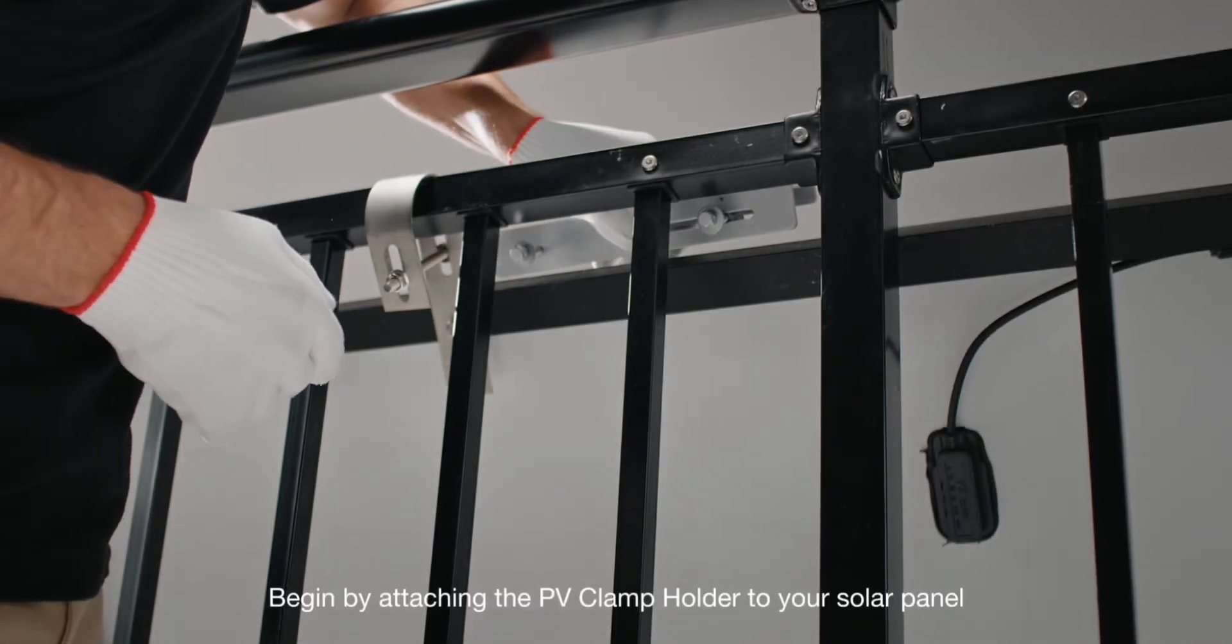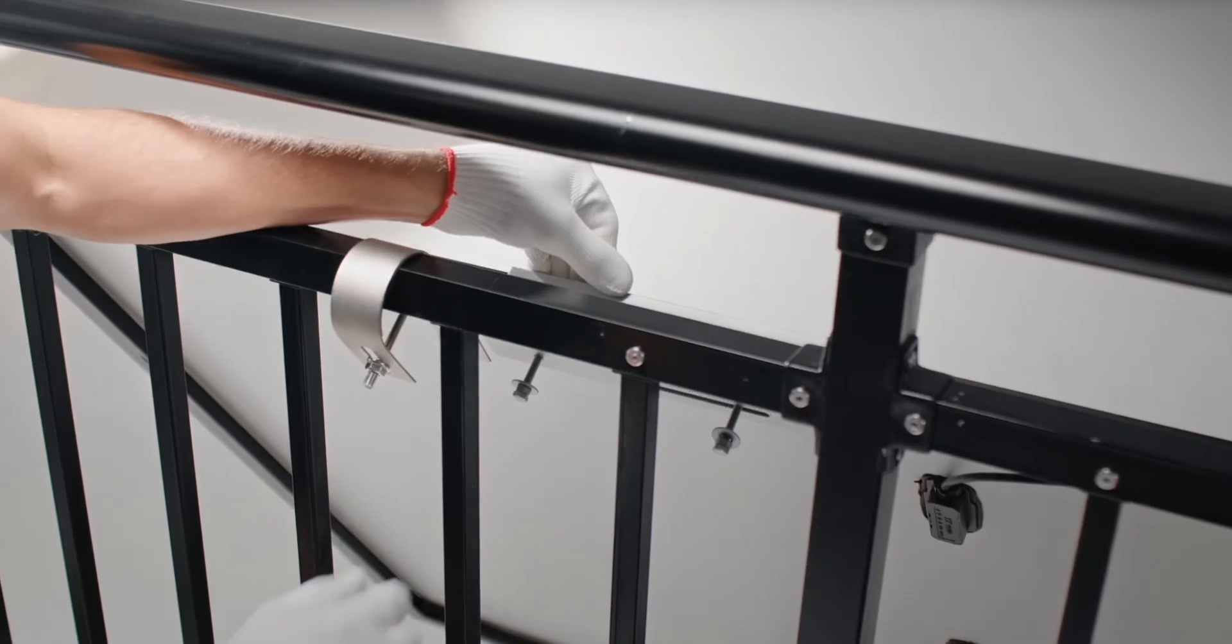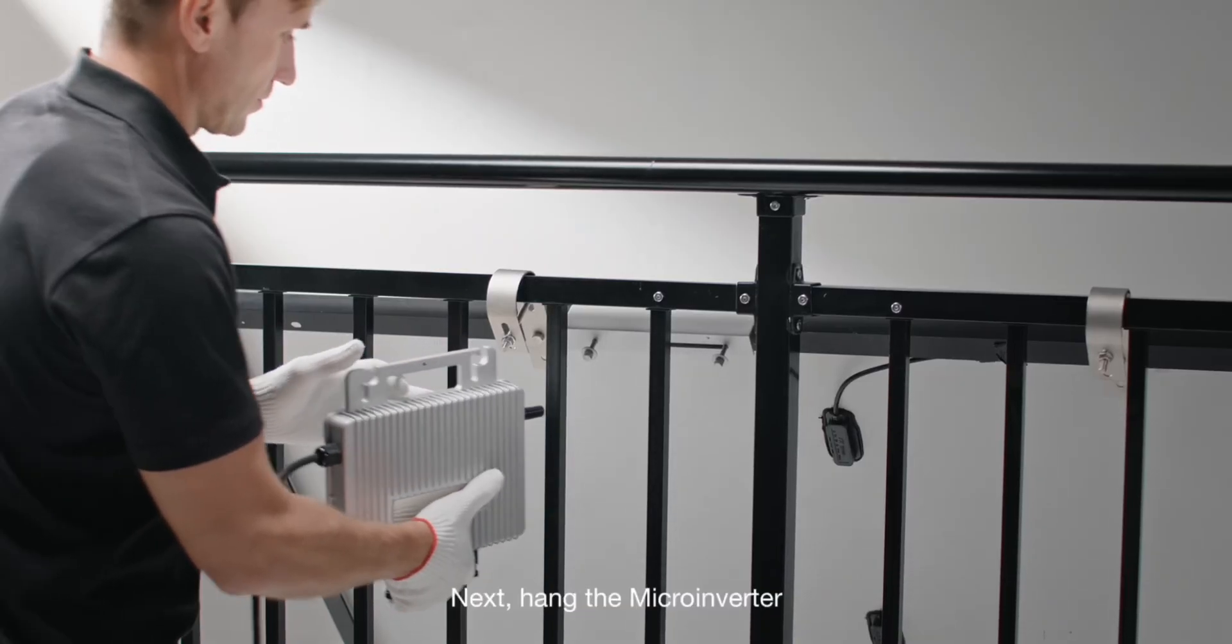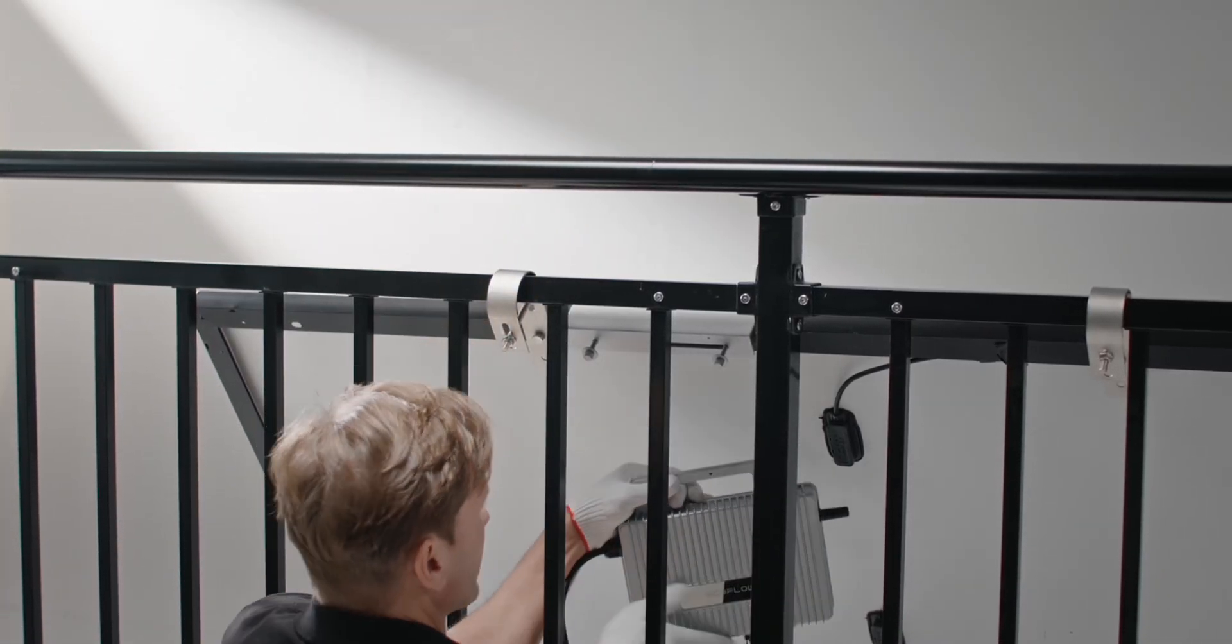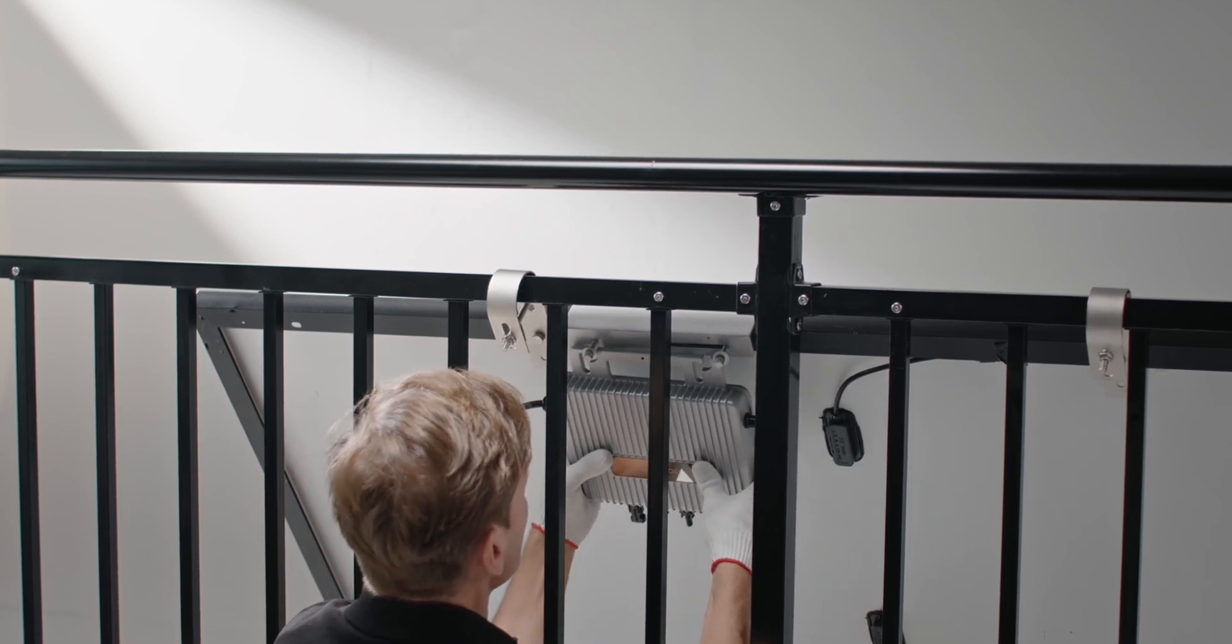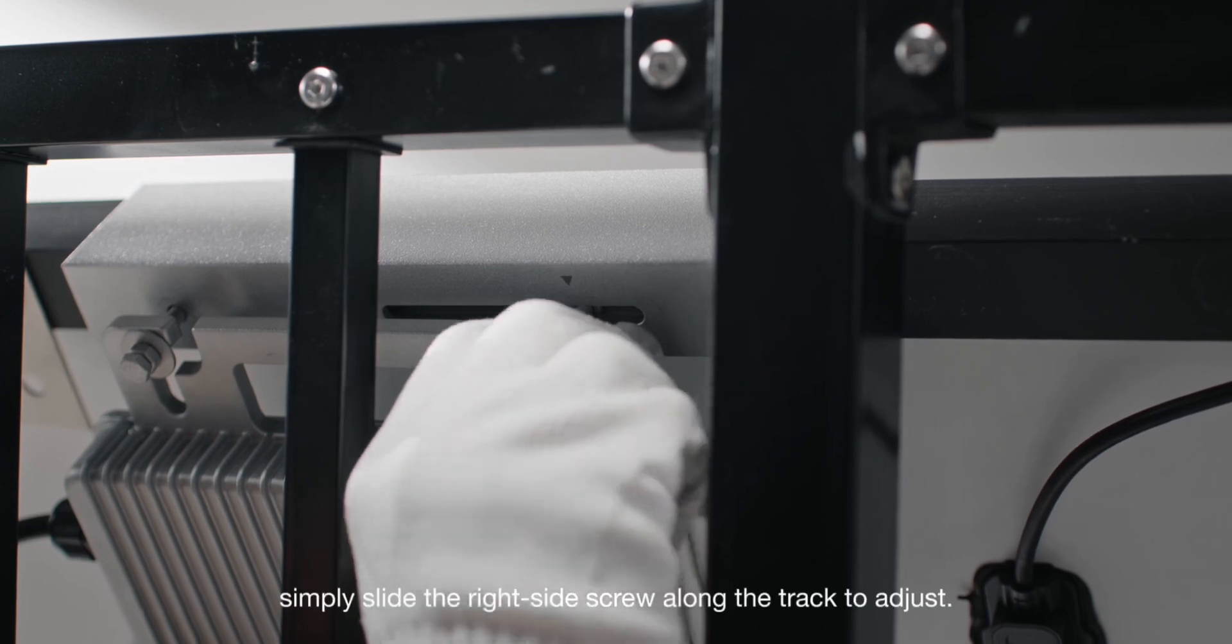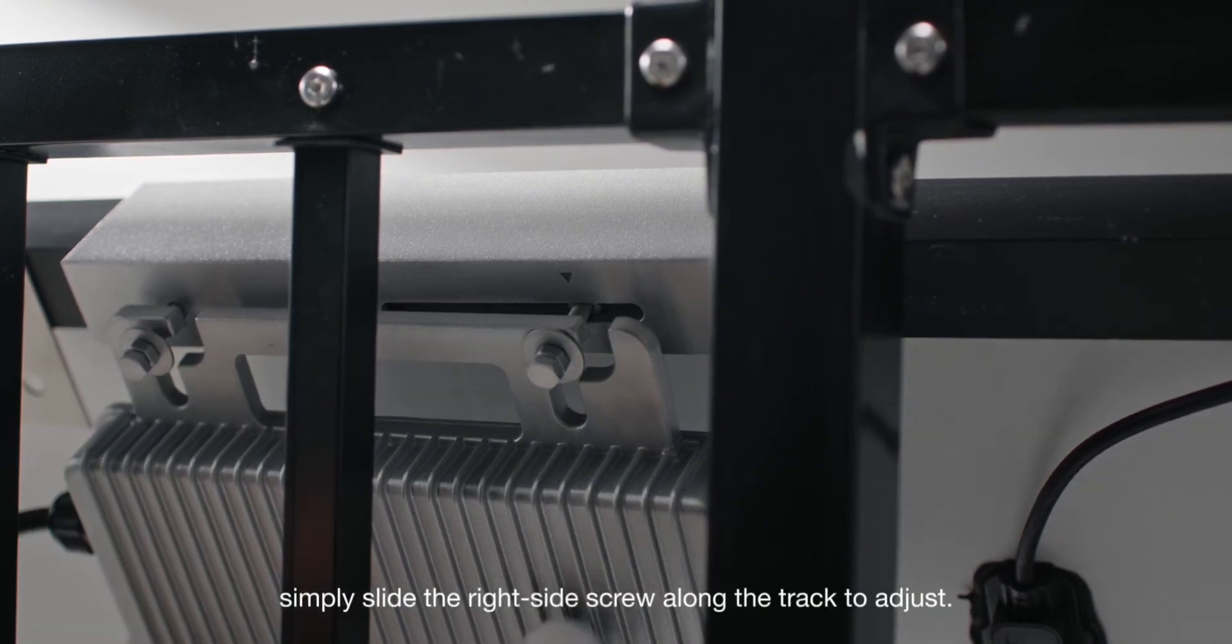Begin by attaching the PV clamp holder to your solar panel. Next, hang the microinverter. If the screws aren't spaced correctly, simply slide the right-side screw along the track to adjust.